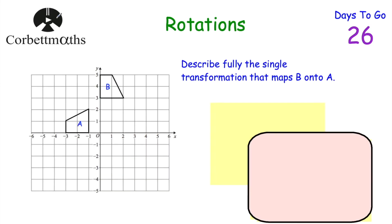Now let's look at a question where you've got to describe a rotation. Here we've got shape A and shape B — both are trapeziums. We've been asked to describe fully the single transformation that maps B onto A. I want you to pause the video now and see if you can describe that transformation.